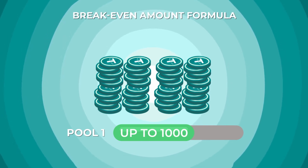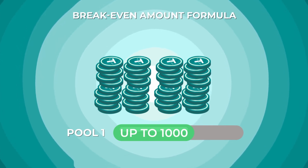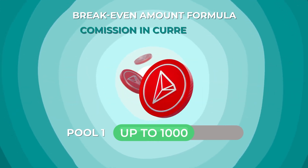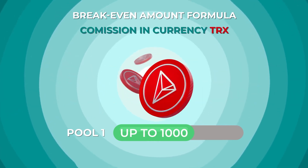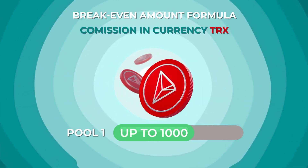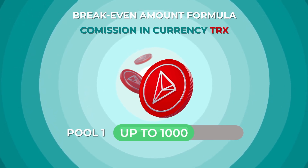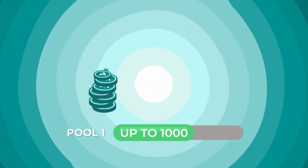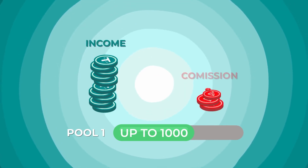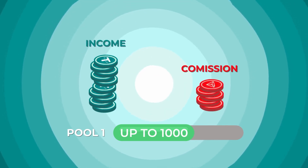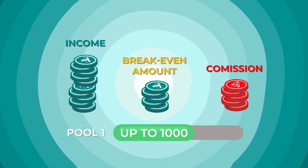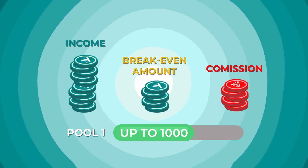The break-even point is calculated in connection with the daily commission deduction in TRON (TRX) for transferring the staking amount to the mempool. To ensure that the income from staking is higher than the cost of transferring to the mempool, it is recommended to confirm a staking amount equal to or greater than the break-even amount.